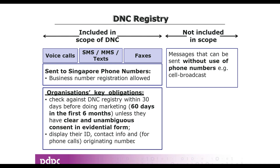Organizations must check against the DNC within 30 days before doing marketing — 60 days in the first six months — unless they have clear, unambiguous consent in evidential form. They must display their ID, contact info, and originating number, so masking or bouncing calls via Skype to hide the number is not allowed. Regarding cost: access to the DNC registry is not free. There is a prepaid and postpaid mode, and organizations have to pay a fee to check whether the numbers they are contacting are in the DNC registry.